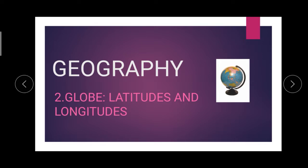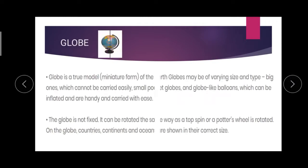We are going to see about latitudes and longitudes. First, what is a globe? Globe is a true model — that is, a miniature form of the earth. Globes may be of different size, different type.